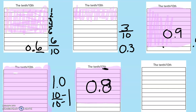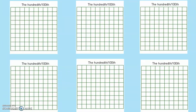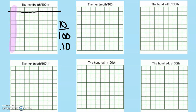Now these are hundredths. There are still ten rows and ten rods, but each rod is split into ten parts, so now we have ten rows of ten, which is a hundred. If I shade in one full row, that is one tenth, but I can also say it's ten out of a hundred — so I write it as 0.10, ten hundredths. If I go across one row plus six more units, that's ten and six, which is sixteen hundredths — written as 0.16.